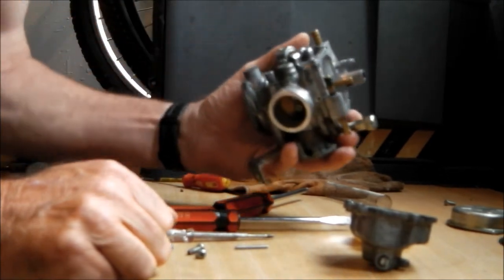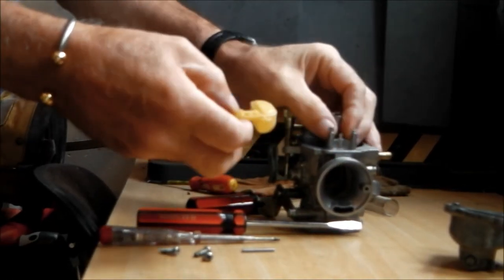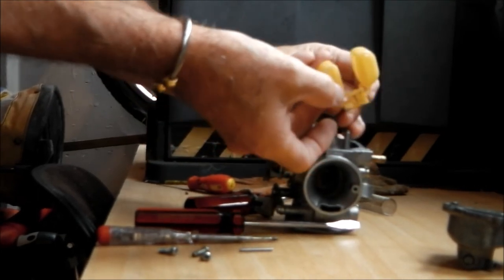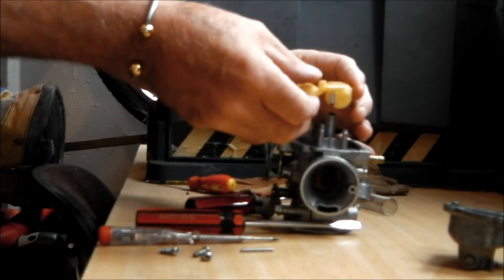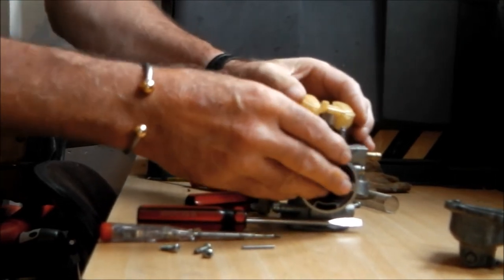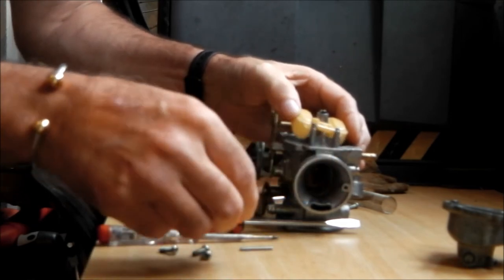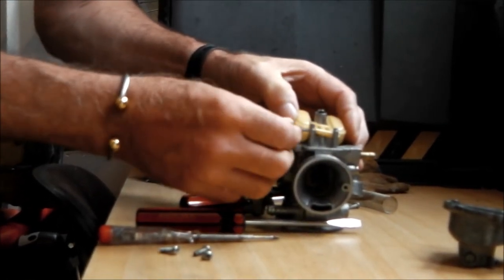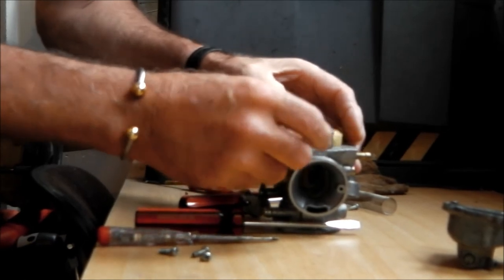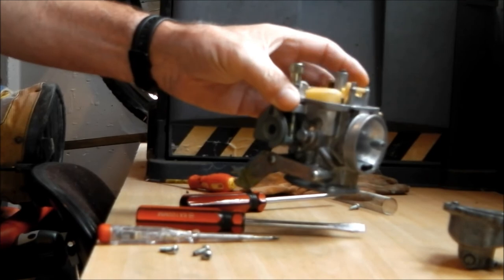You might have to fiddle about with that when you put the carb back on the bike. This is fiddly this bit. So what I'm going to do, slide it onto the float first. Try and insert it in the hole as we go down. Then get the pin and slide it through. Like so. There we are. That's all that fitted back in.